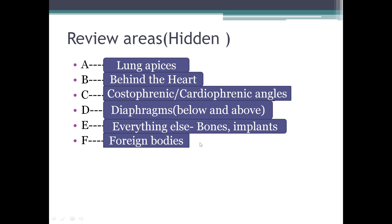There are certain review areas in the radiograph, also known as hidden areas, with an ABCDEF mnemonic. A stands for lung apices — look for apical pleural effusion, apical plaque, or apical mass. B stands for behind the heart — look for any consolidation or collapse. C stands for costophrenic or cardiophrenic angles. D stands for diaphragms — look above and below for any pathology. E stands for everything else, like bones and implants. F stands for foreign bodies, such as metallic bullets or any other foreign body within the radiograph.